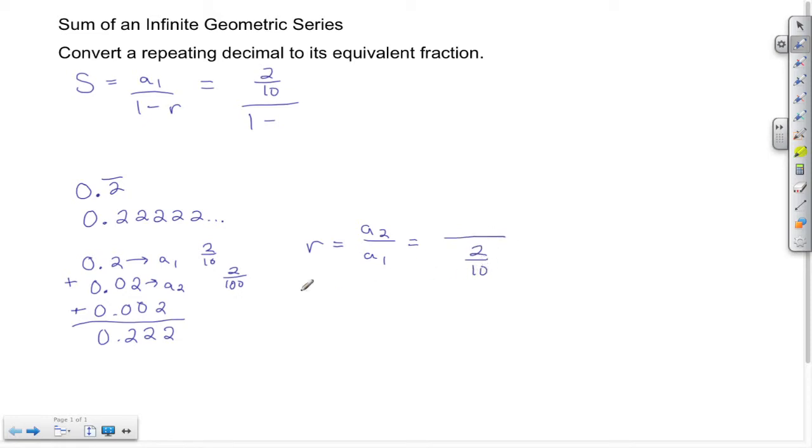In our example here, the first term is 2/10. I'll put that as my denominator. And the second term is 2/100, and I'll place that as my numerator. Here we have a complex fraction, and to solve a complex fraction, we take the top fraction, which represents the numerator, and multiply that by the reciprocal of the bottom fraction, which represents the denominator.